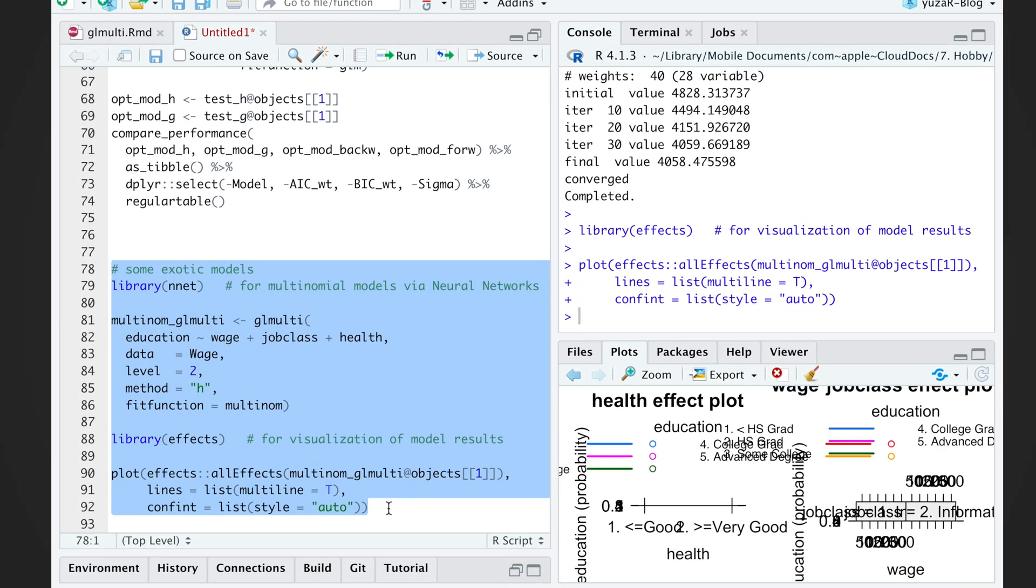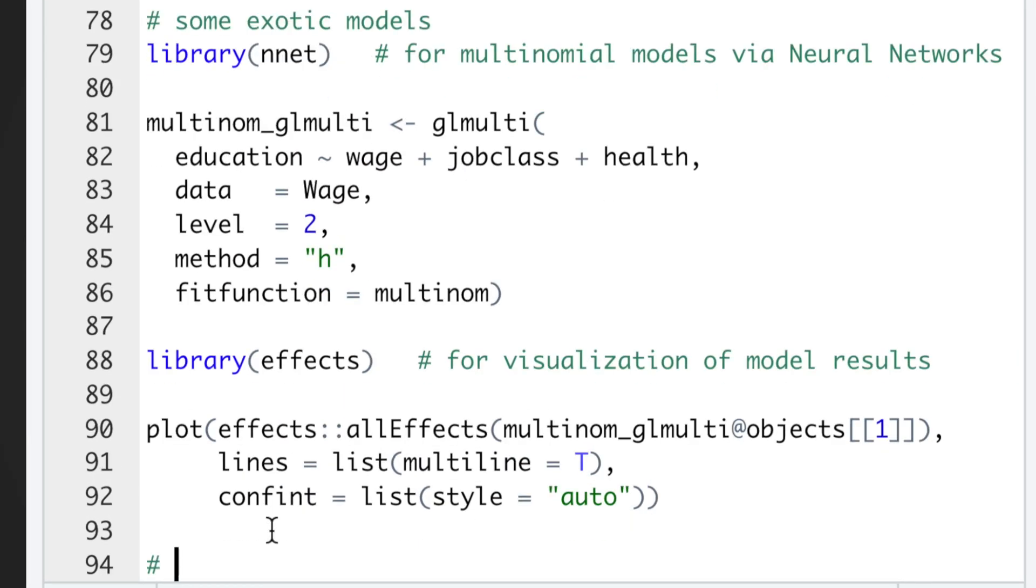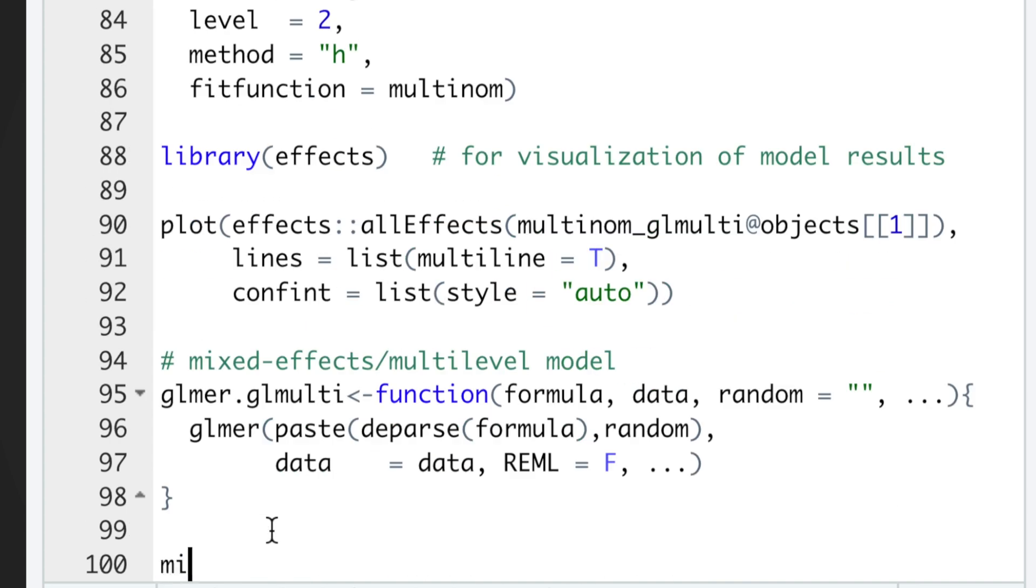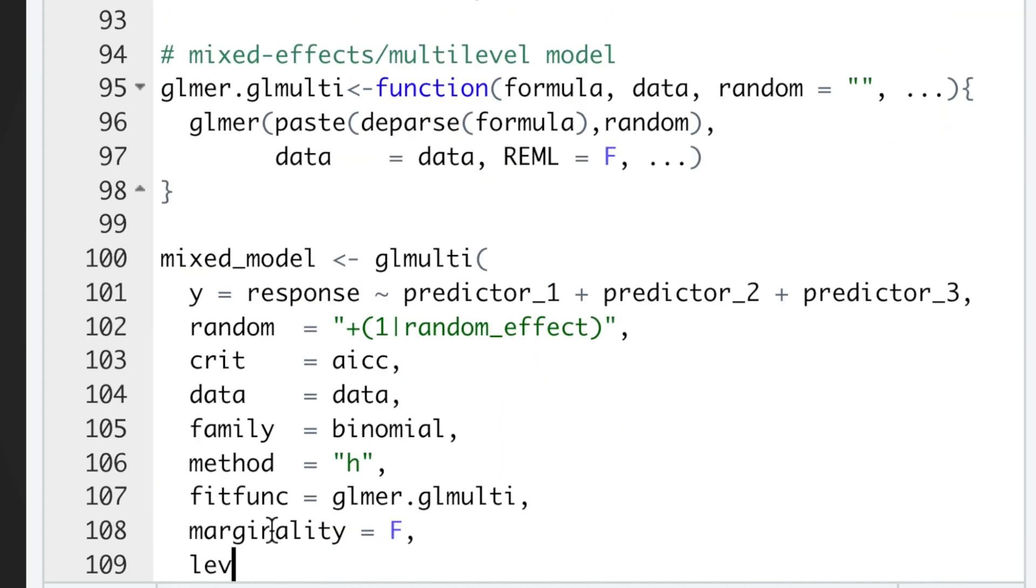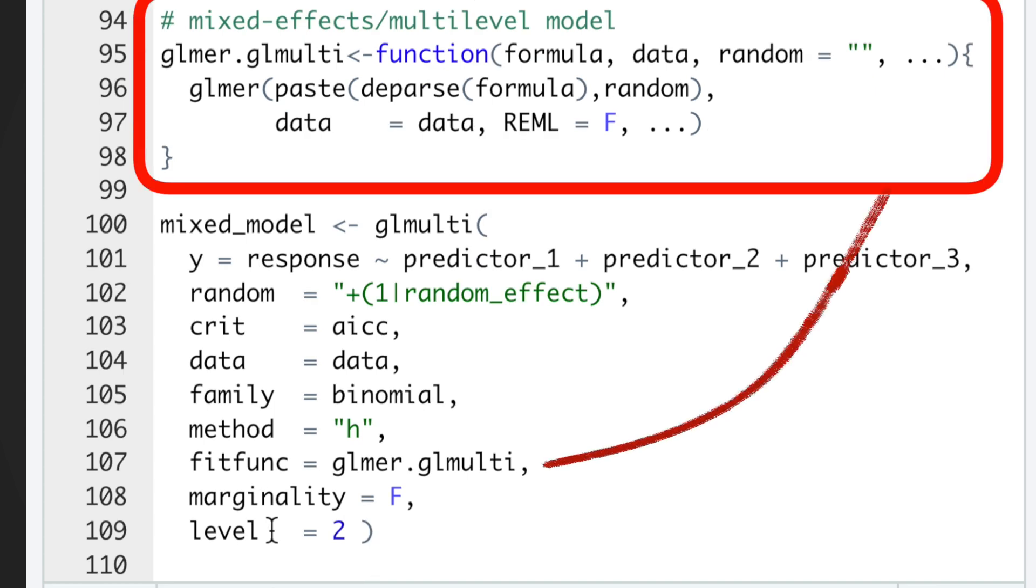And lastly, despite the fact that there is no straightforward fitting function for mixed-effects models, such as glmr from lme4 package, we can easily write our own wrapper function and use it inside of glmulti.